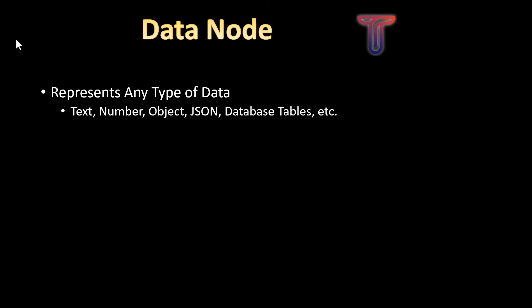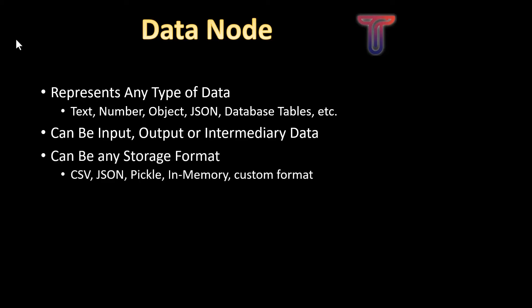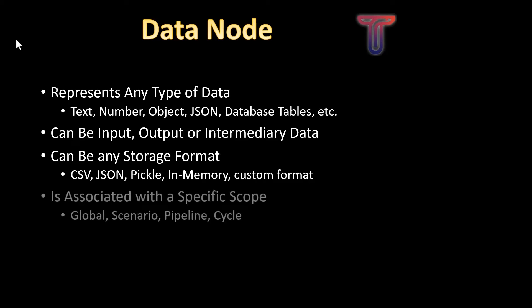A data node can represent any type of data: text, number, object, JSON, database tables, etc. It can be input data, output data, or intermediary data used by the application. It can be any type of storage format: CSV, JSON, pickle, in-memory, or custom formats.